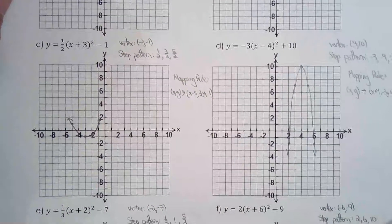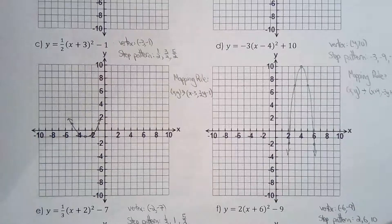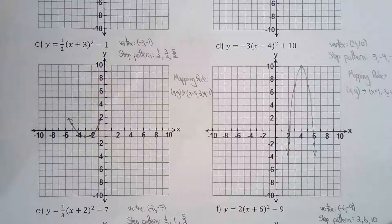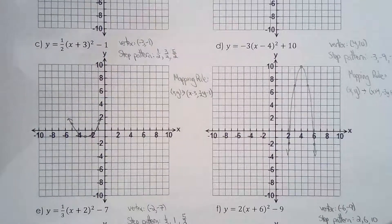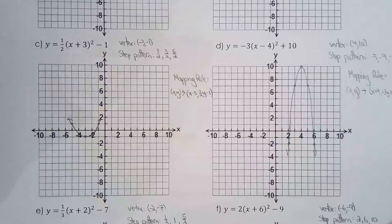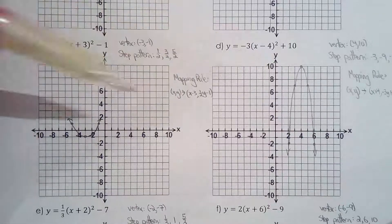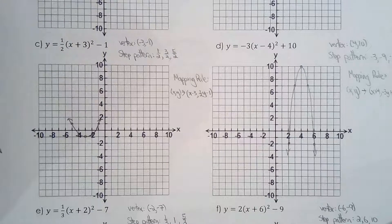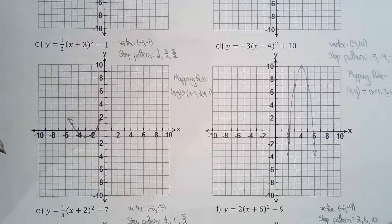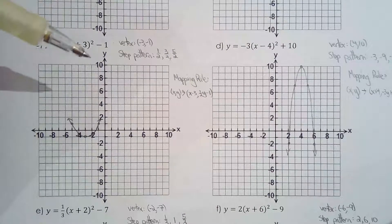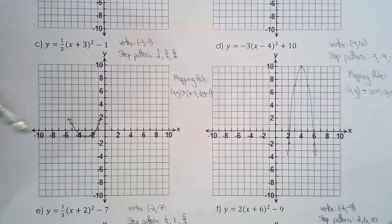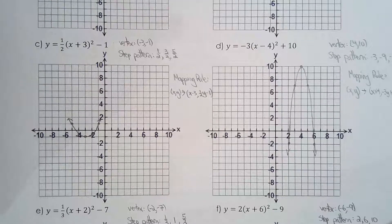For C and D, that's when it gets a little more interesting. Nothing too crazy. I gave you the step pattern, I gave you the mapping rule. Try to give yourself five points when you're graphing a parabola. You can give yourself one, but it's usually a minimum of five.